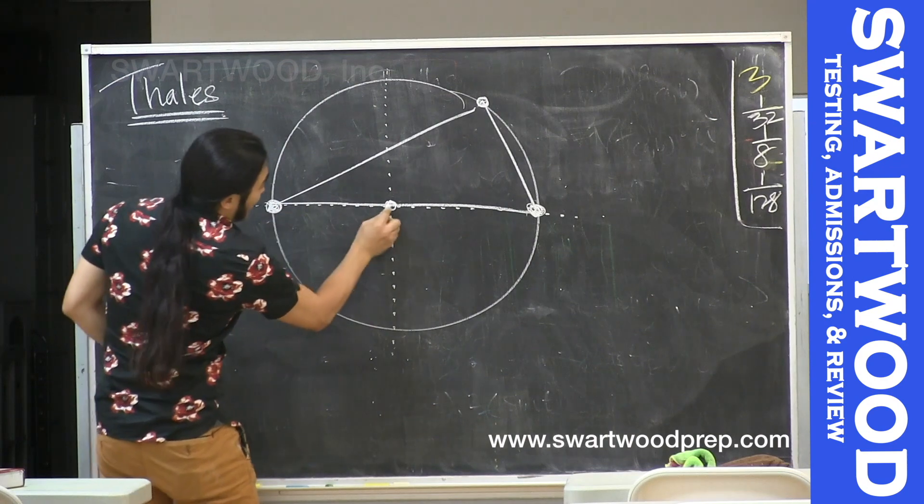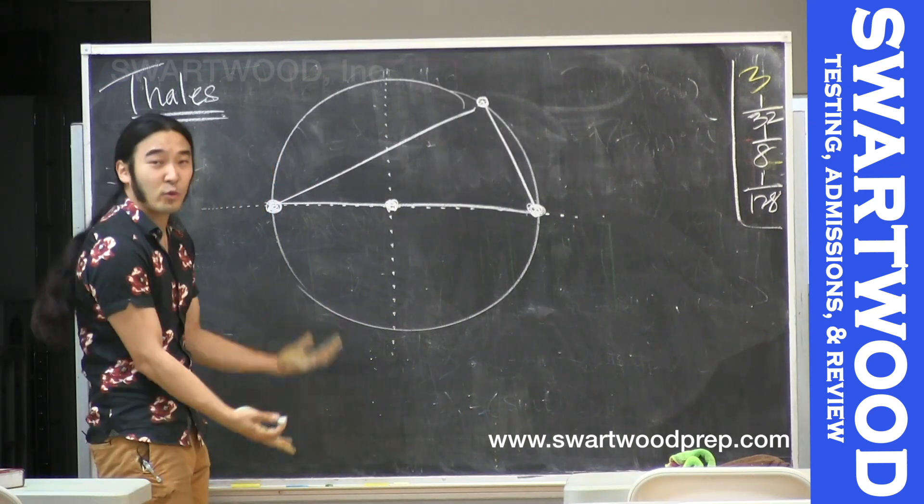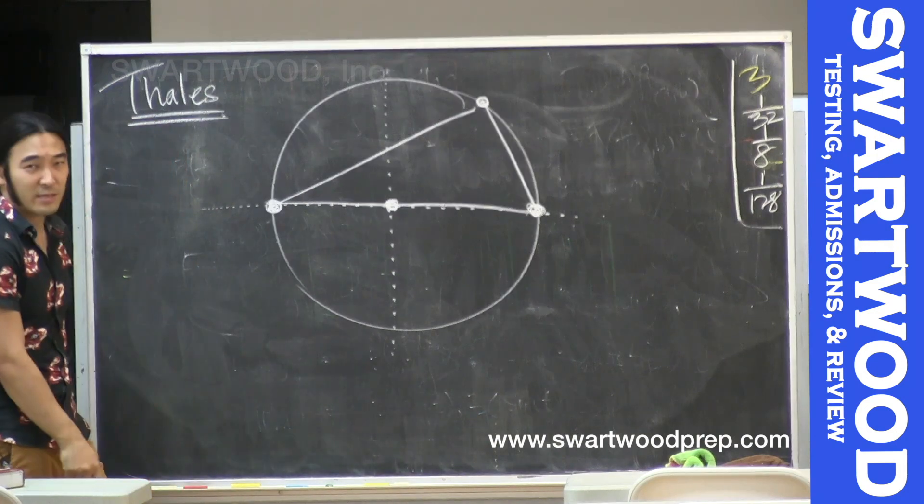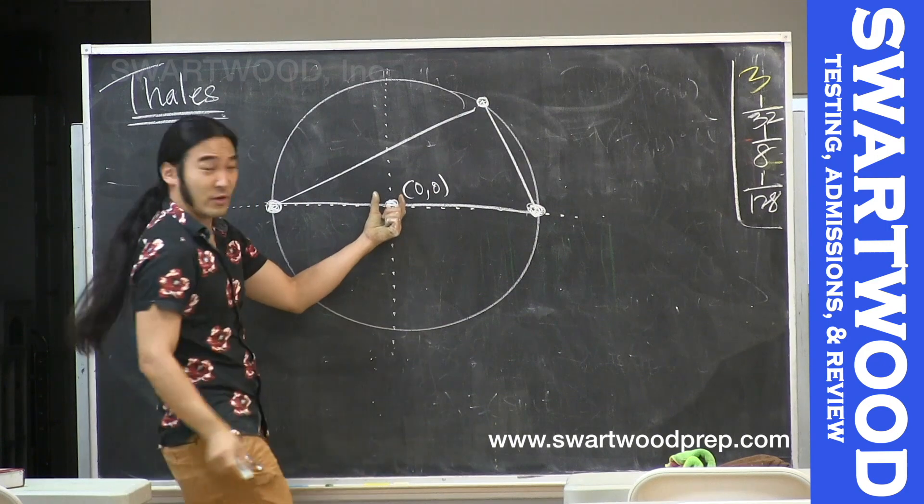So you could do this with just plain geometry but what we want to do here is practice vector methods. A key thing here is pick a good coordinate system. I think this setup is nice. Why don't we just pick this to be (0,0).